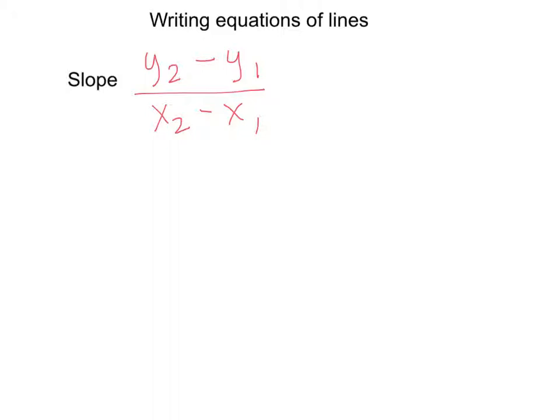The same thing applies here as what we talked about previously with our distance formula. Anytime you have a point, it does not matter which point comes first as long as you line them up. I like to read left to right, so I always start with my left point first. Slope formula is the y's over the x's, which also makes rise over run, so you know it's y over x.